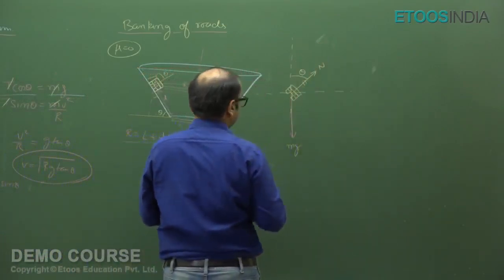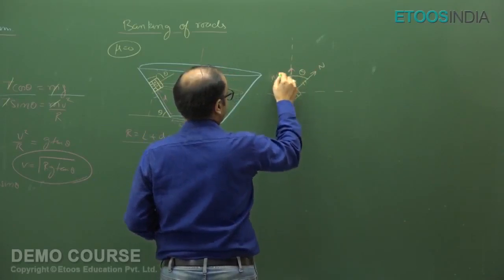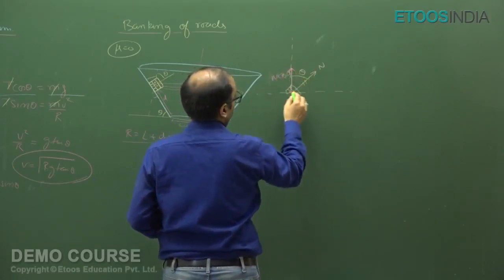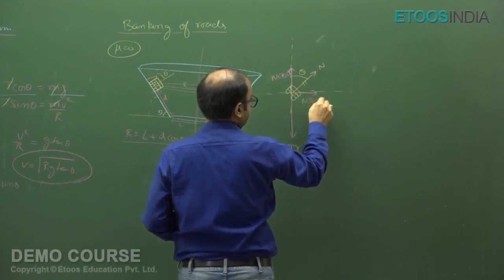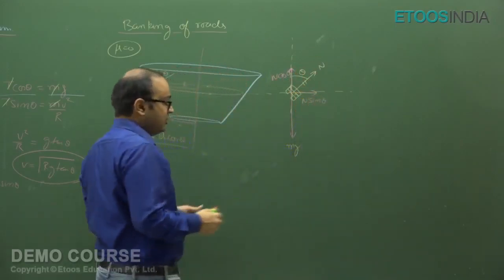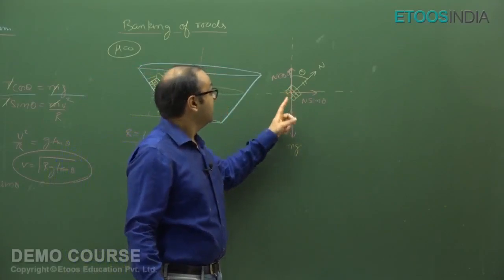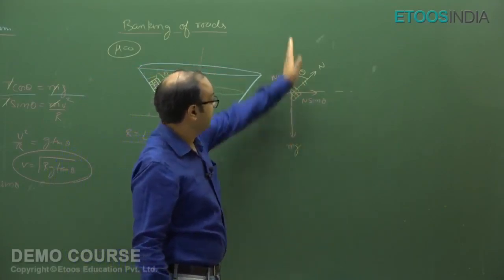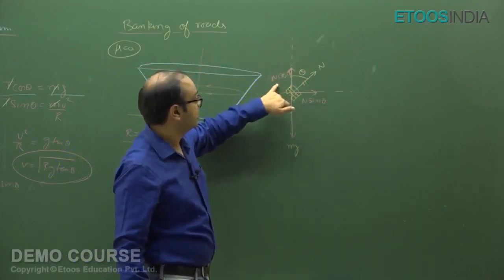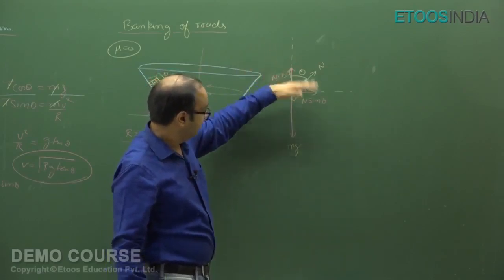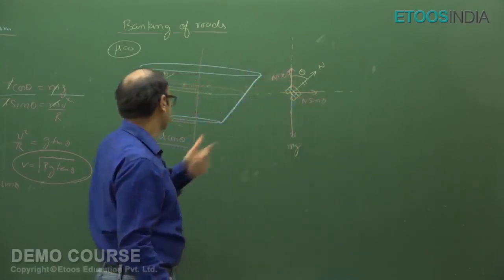So the component in the direction perpendicular to the plane is N cos theta, and the component in the radial direction is N sin theta. Now comes the next step: net force in the perpendicular direction equals zero, which gives N cos theta = Mg.